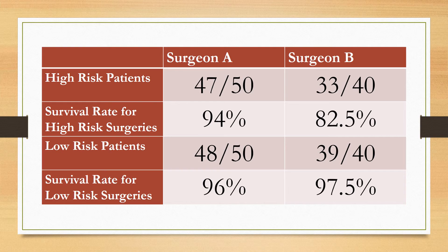Let's look at the risk level of the patients operated on — both high-risk and low-risk. For high-risk surgeries, Surgeon A operated on 50 patients and 47 survived, giving a 94% survival rate. Surgeon B operated on 40 high-risk patients and 33 survived, for 82.5%. For low-risk surgeries, Surgeon A operated on 50 patients and 48 survived, giving a 96% survival rate. Surgeon B operated on 40 low-risk patients and 39 survived, for a 97.5% survival rate.